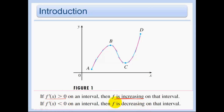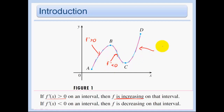So from a to b, we see that f prime is positive. From b to c, we see that f prime is negative. And from c to d, we again see that f prime is positive. So f is increasing, then decreasing, then increasing.